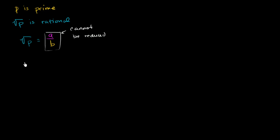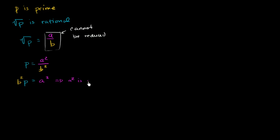So let's see if we can manipulate this a little bit. Let's take the square of both sides. We get p is equal to a over b, the whole thing squared, that's the same thing as a squared over b squared. We can multiply both sides by b squared, and we get b squared times p is equal to a squared. Well, that means that p must be a factor of a squared. So a squared is a multiple of p.